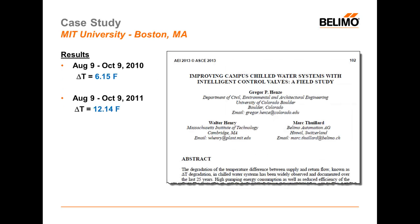From August 9th to October 9th in the year 2010, they experienced a Delta-T of 6.15 prior to Delta-T management. The following year, during the same time period, the Delta-T was nearly doubled when using Delta-T management. Dr. Gregor Henze of the University of Colorado has written an excellent field study report based around the energy valve experience at MIT.